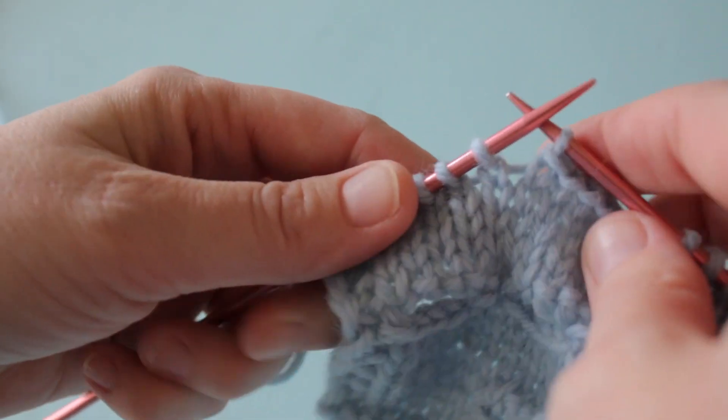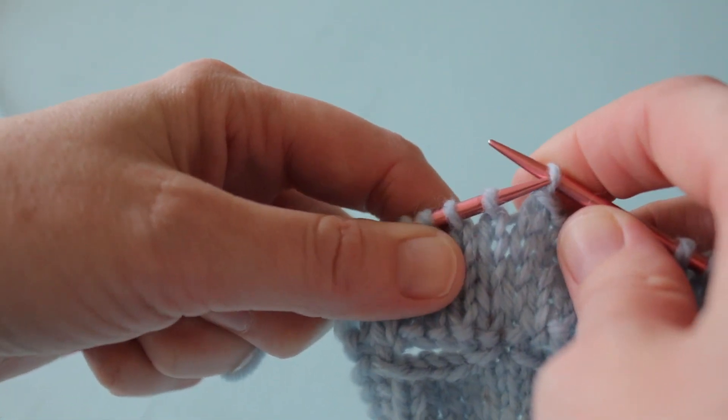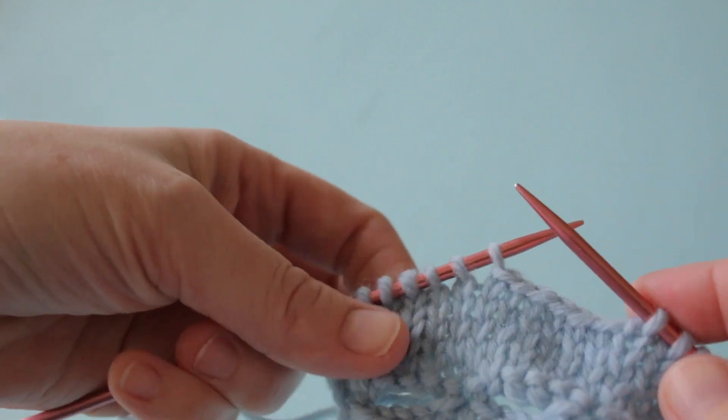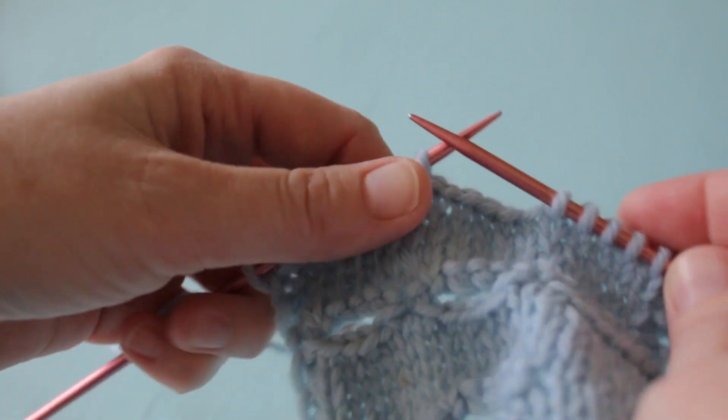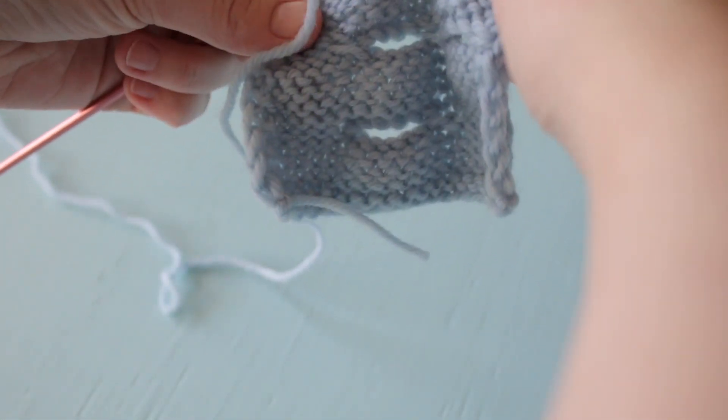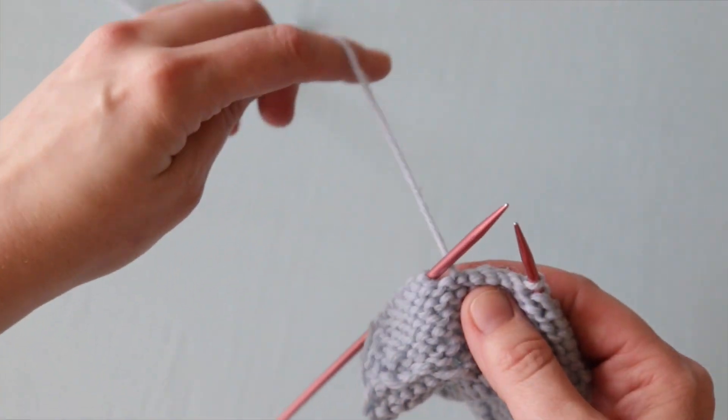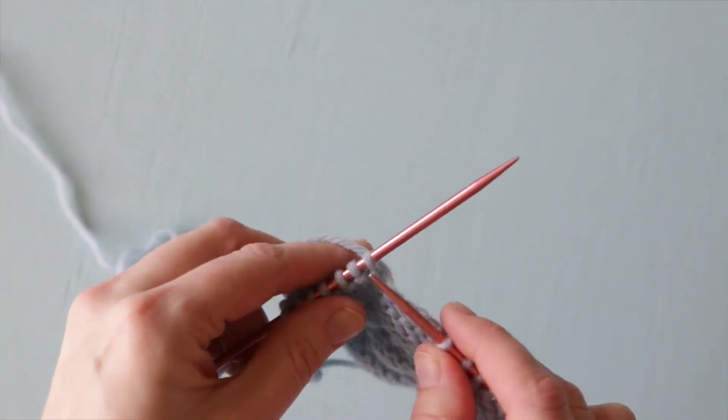Now it's time to slip the last stitch from the bind off we just did back onto the left needle. Next we're going to turn our work to the wrong side even though we have not yet finished the row. Then we need to take the working yarn between our needles to the back of our work. Right now we're looking at the wrong side or the purl side of our work.